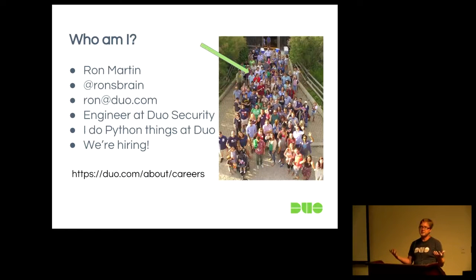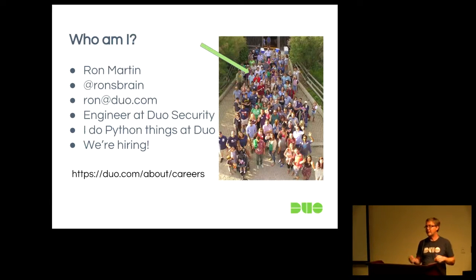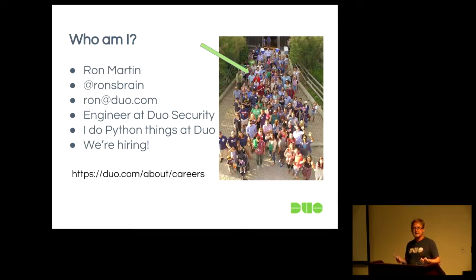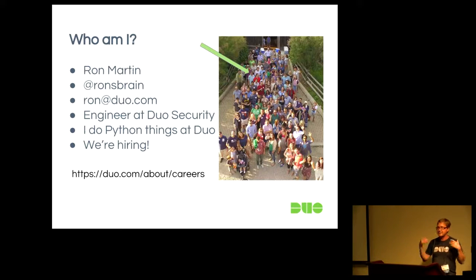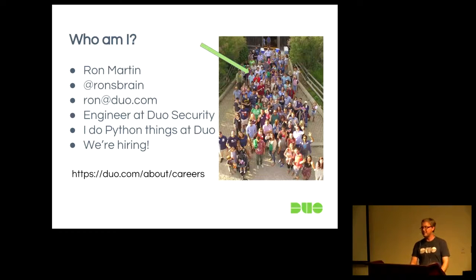Who am I and why should you listen to me? Well, you probably shouldn't, but my name is Ron Martin. My Twitter handle is ronsbrain. You can email me at ron at duo.com. I work at Duo Security. Duo is hiring — if you want to work at a cool place that's focused on quality, kindness, and learning, apply. This picture is from the careers page; that green arrow points to me. This is as famous as I'm ever going to be, so I'm just trying to milk it for everything I can get.